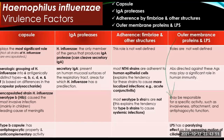Haemophilus influenzae has a wide range of pathogenic potential because of its virulence factors. The following virulence factors play a role in the initiation of infection and invasiveness: the capsule, IgA proteases, adherence through fimbriae and other structures, and outer membrane proteins and LPS. Of all the virulence factors, the capsule — if present — plays the most significant role. Serologic grouping of H. influenzae into six antigenically distinct types A, B, C, D, E, and F is based on differences in the capsular polysaccharide.